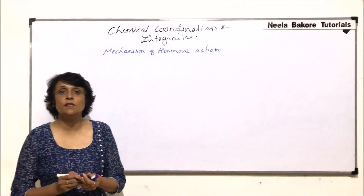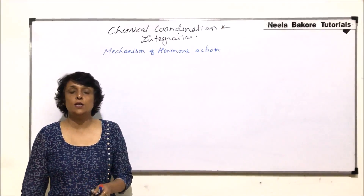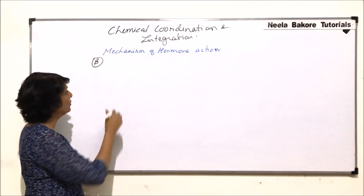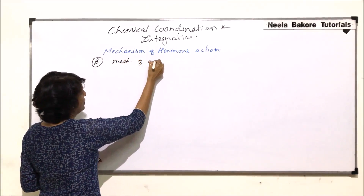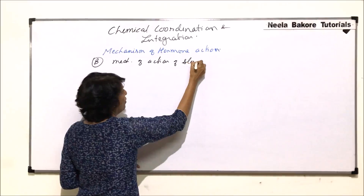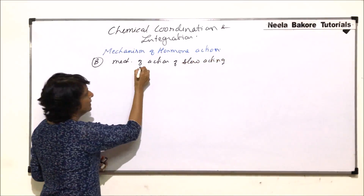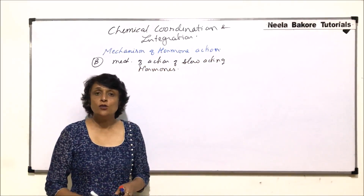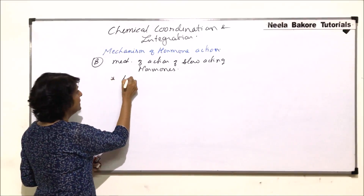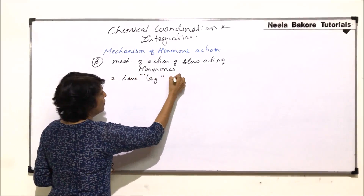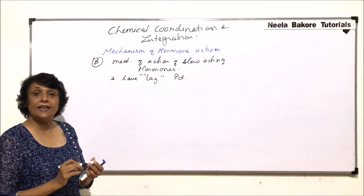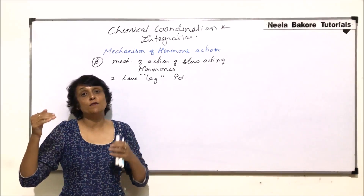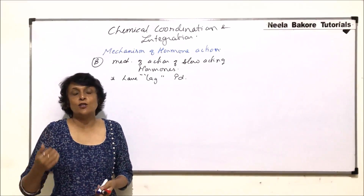In this section we will take up the mechanism of action of slow acting hormones. We have already discussed the quick acting hormones. These slow acting hormones actually have a lag period. The lag period is the time between the release of the hormone and its first effect or reaction or function.